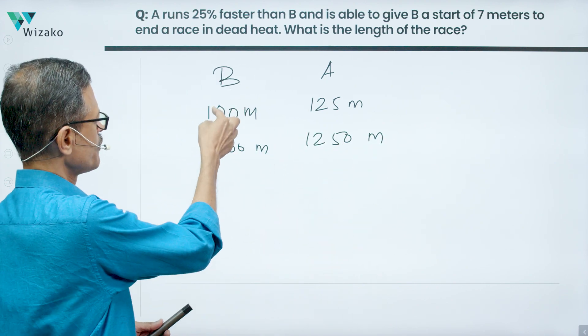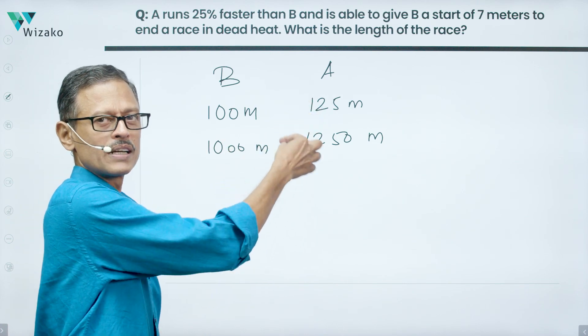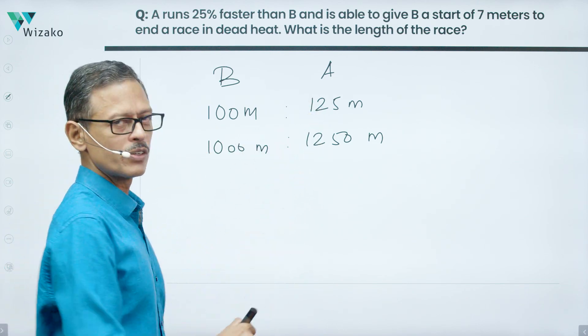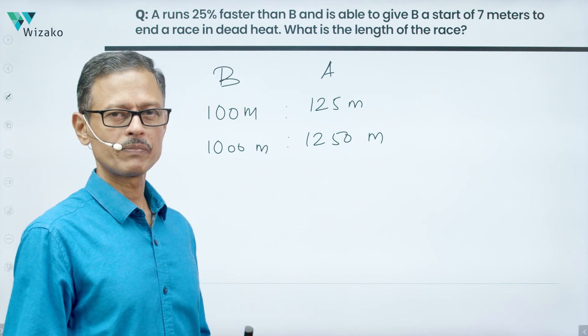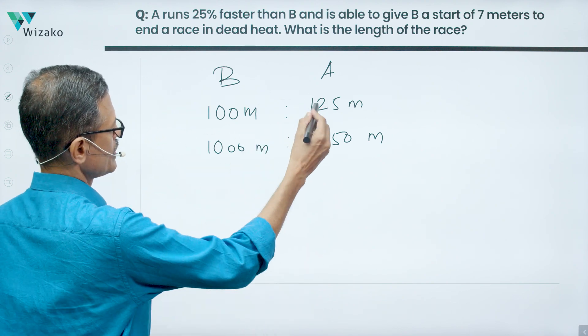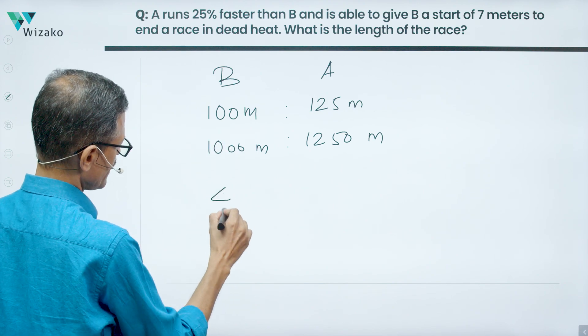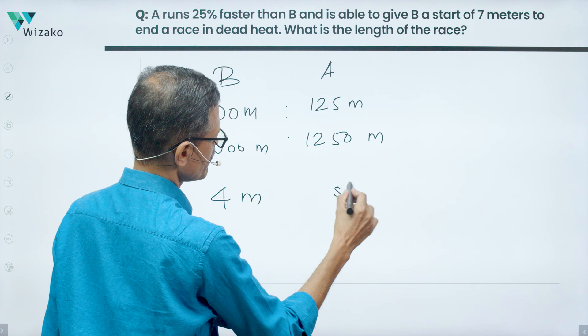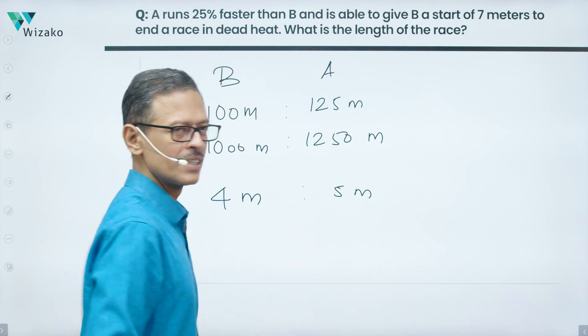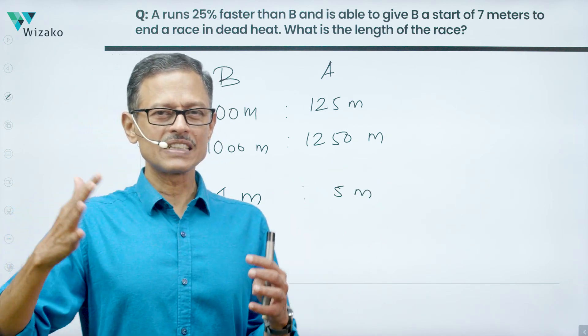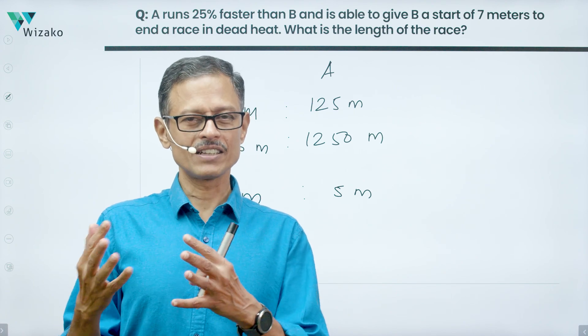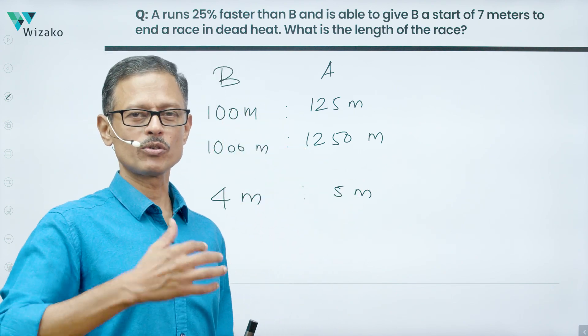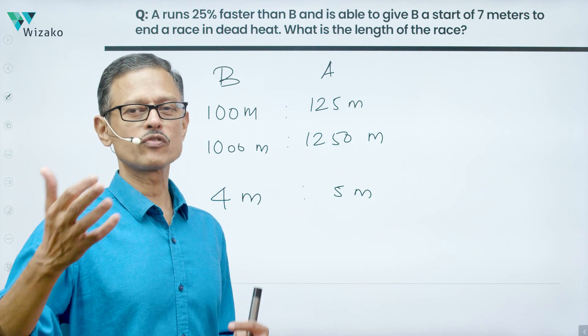You'll quickly realize if B runs 10 times more distance, A would run 10 times more distance. This proportionality is maintained. Now if B runs 4 meters (I'm dividing by 25), A would at the same time run 5 meters. So the ratio of the distances that A and B cover are in the ratio of 5 is to 4. When A runs 5 meters, B runs 4 meters.